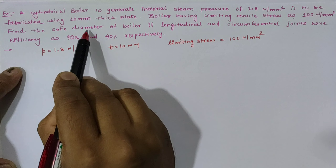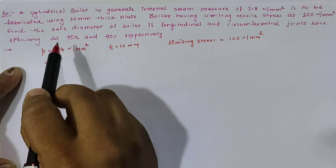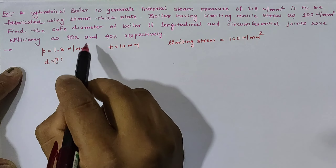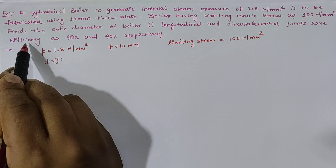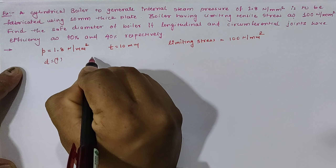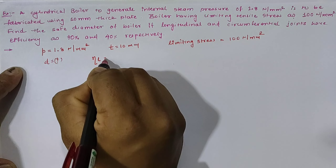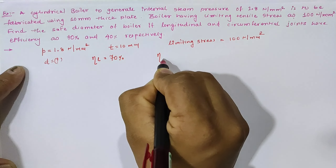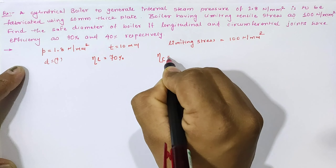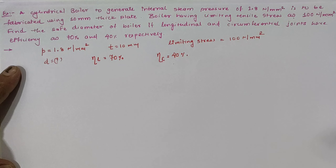We have to find the safe diameter — that is, the diameter of the boiler which can safely withstand 1.8 Newton per mm square — where the longitudinal joint efficiency is 70 percent and the circumferential joint efficiency is 40 percent.